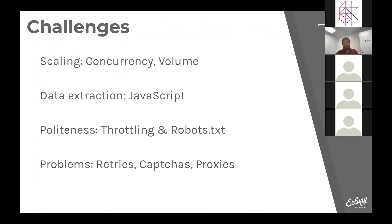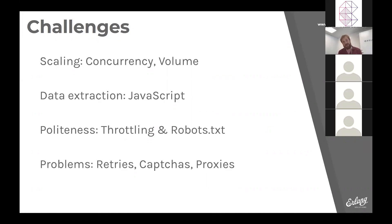Another challenge is politeness. It's important to be polite — you probably wouldn't want to use a scraping engine as another DDoS platform, unless you want the side effects, which might include having your door knocked. In general, it's important not only to have a large number of connections, but also to be able to throttle requests to a given target on demand and to really understand how fast you are.